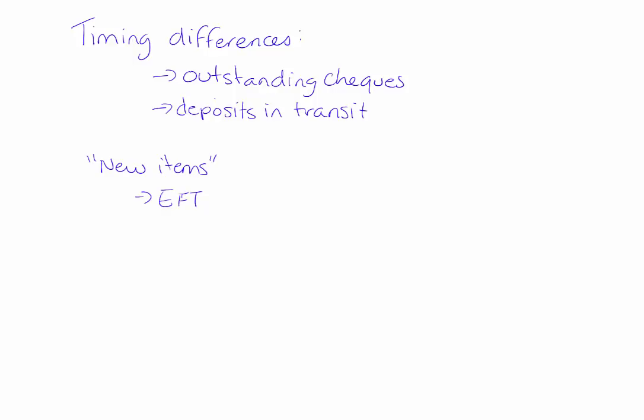These are called deposits in transit. There are also items that we just don't know about until the end of the month — for example, an EFT or electronic funds transfer. If someone is transferring funds into our bank account without telling us, we might only learn about that transfer at the end of the month when we get our bank statement. This is not an error; we're just learning about it then. Similarly, interest deposited into or taken out of our account, and bank charges deducted once a month — we won't learn about these amounts until we actually get our bank statement.